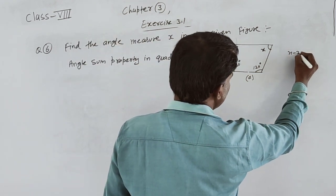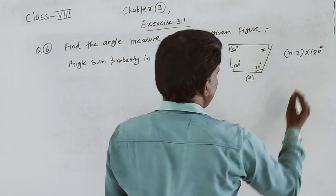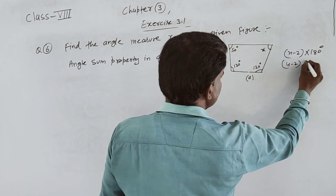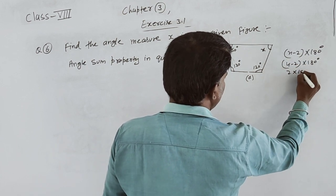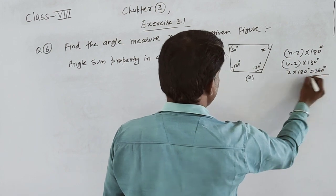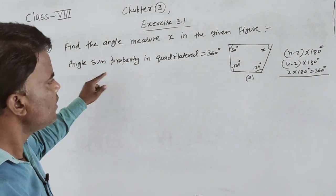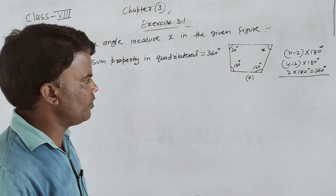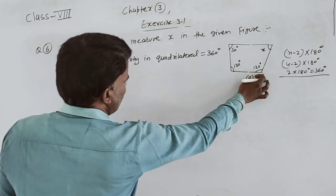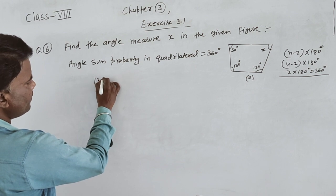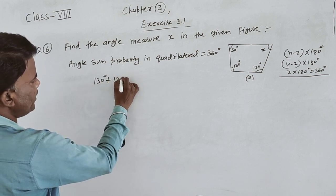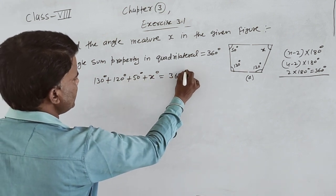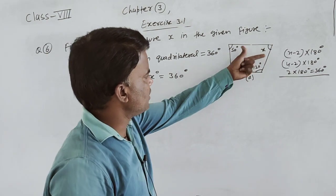Angle sum property in quadrilateral — यह कितना होता है? 360 degrees। Formula है N minus 2, multiply 180 — quadrilateral में N है 4 — 4 minus 2, multiply 180 — 2 multiply 180 — it means 360 degrees। तो इस formula को use करेंगे। Sum of angles: 130 degrees plus 140 degrees plus 50 degrees plus X degrees — यह किसके equal होगा — 360 degrees।